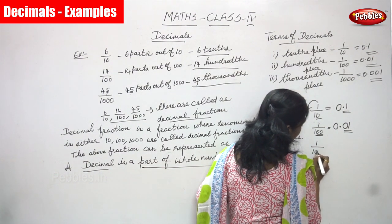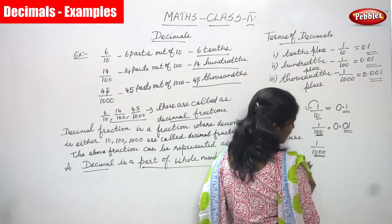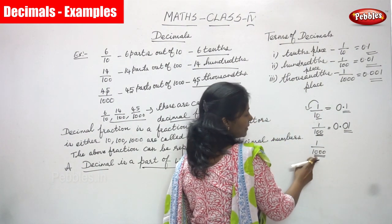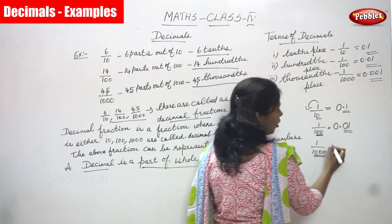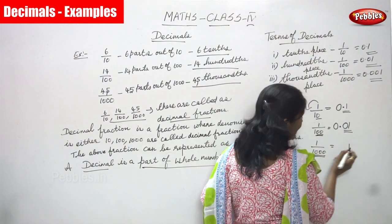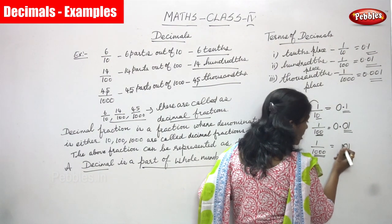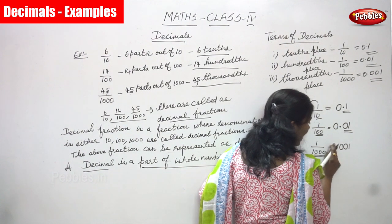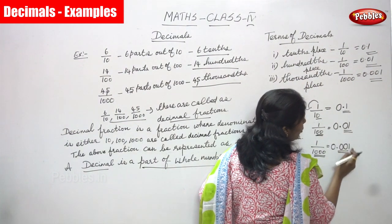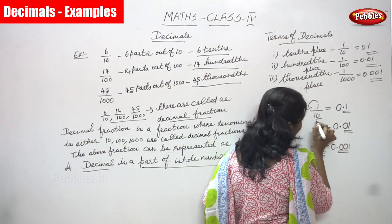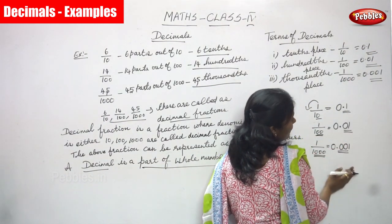For 1 by 100, the denominator has two zeros, so you move two places to the left. Write 1, add zeros for the missing digits, put a point, then add a zero before the point — the answer is 0.01. For 1 by 1000, the denominator has three zeros, so you move three places. Write 1, add two zeros, put a point, then one zero before the point — the answer is 0.001. This is the right methodology.